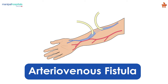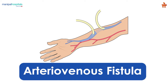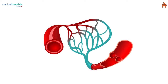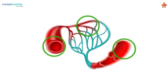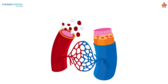An arteriovenous fistula is an abnormal connection between an artery and a vein. Normally, blood flows from your arteries to your capillaries and then onto your veins, but with an arteriovenous fistula, blood flows directly from an artery into a vein.